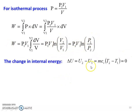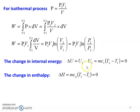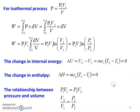For the isothermal process, ΔU = MCv(T2 − T1) = 0 and ΔH = MCp(T2 − T1) = 0, since T1 equals T2 (constant temperature). The relationship between pressure and volume: P1V1 = P2V2, so the volume ratio V2/V1 = P1/P2.